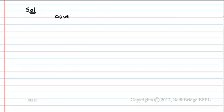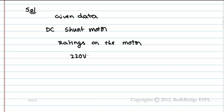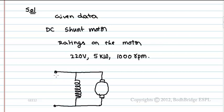Solution: Given data, DC shunt motor. Rating of the motor 220V, 5KW, 1000RPM. This is DC voltage V equals 220V, RA and EB. RA is armature resistance given as 0.25 Ohms.